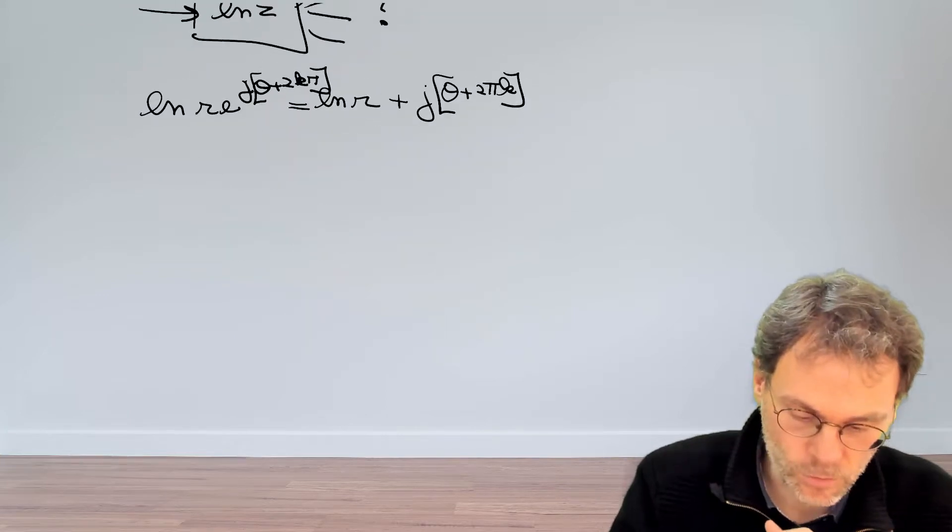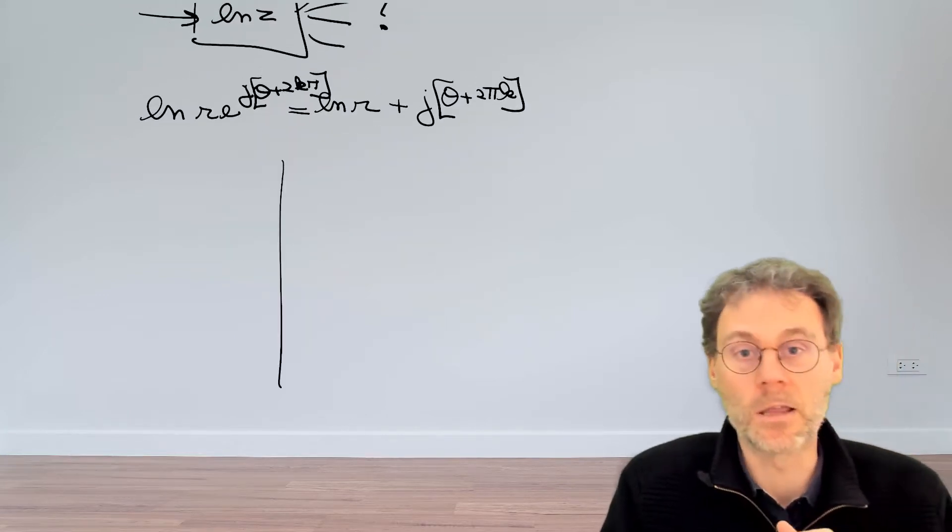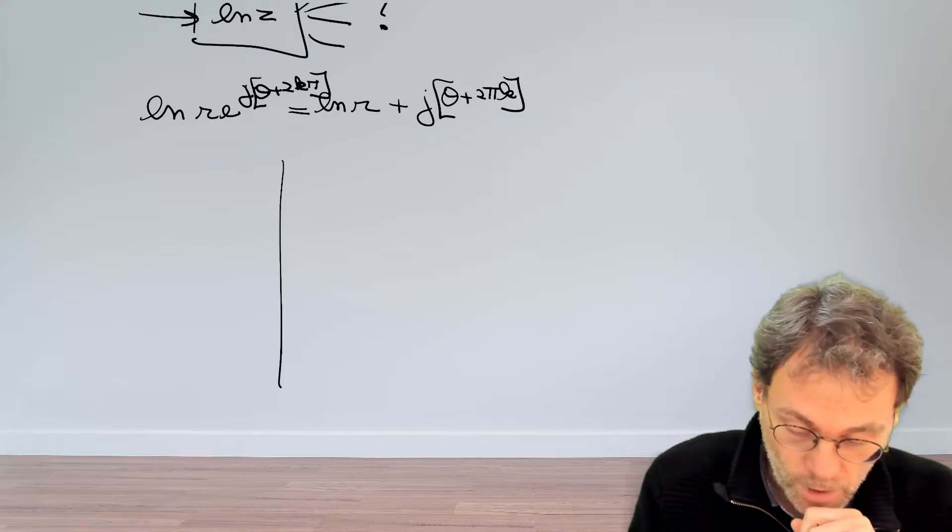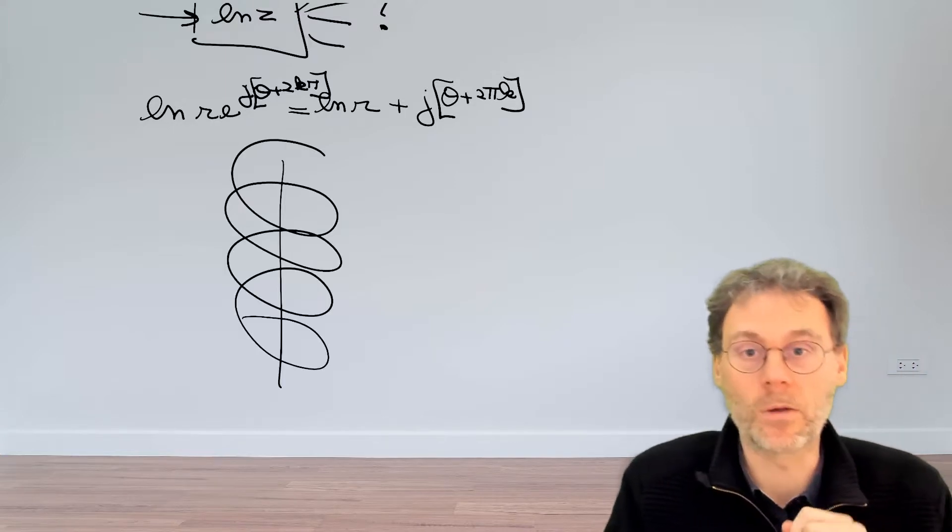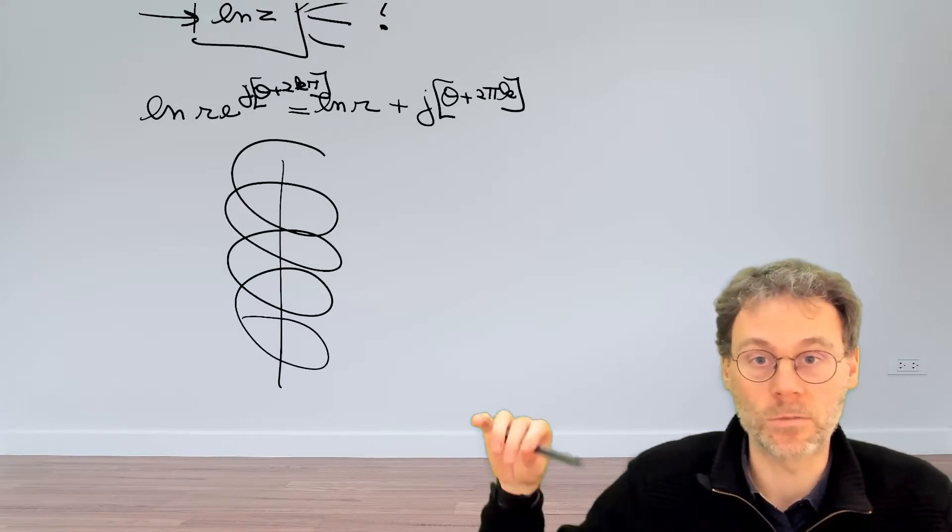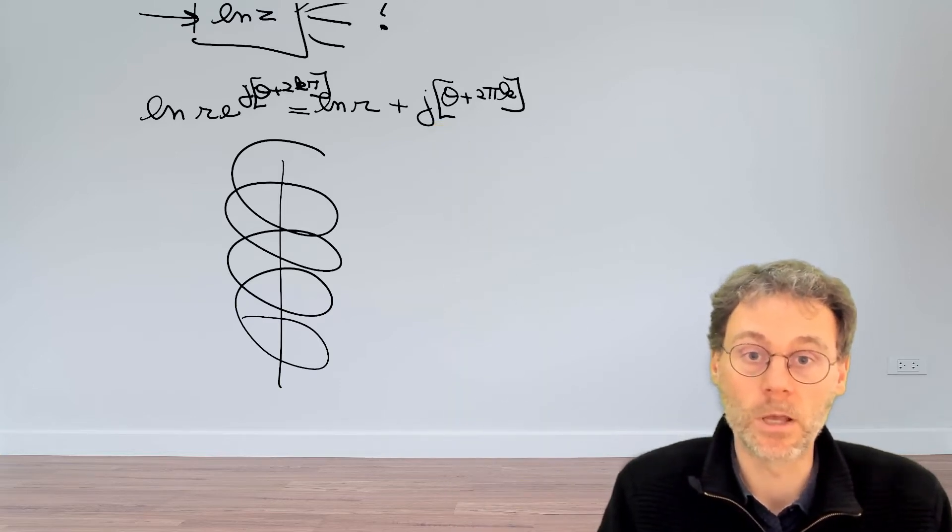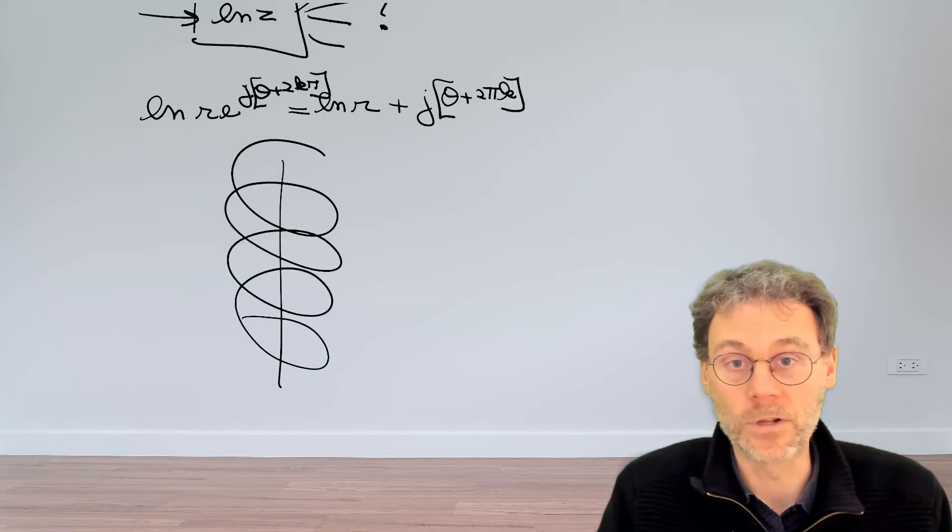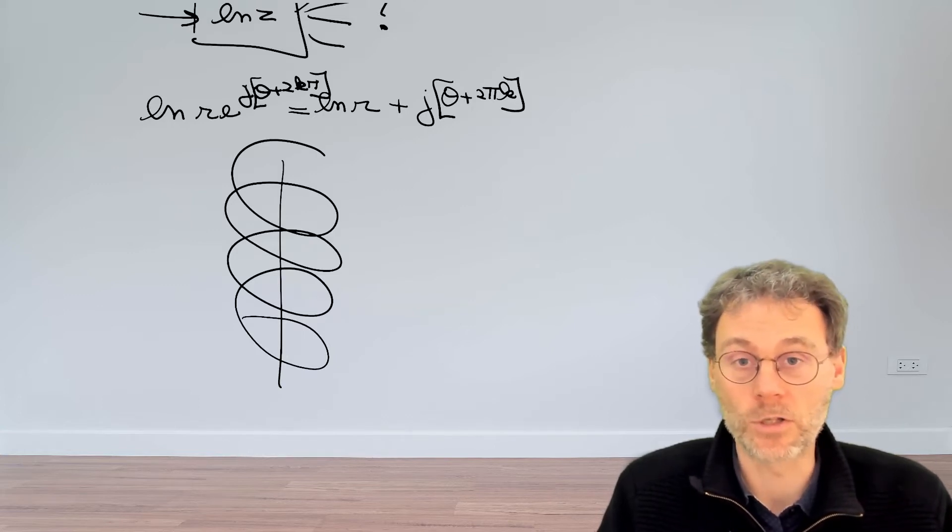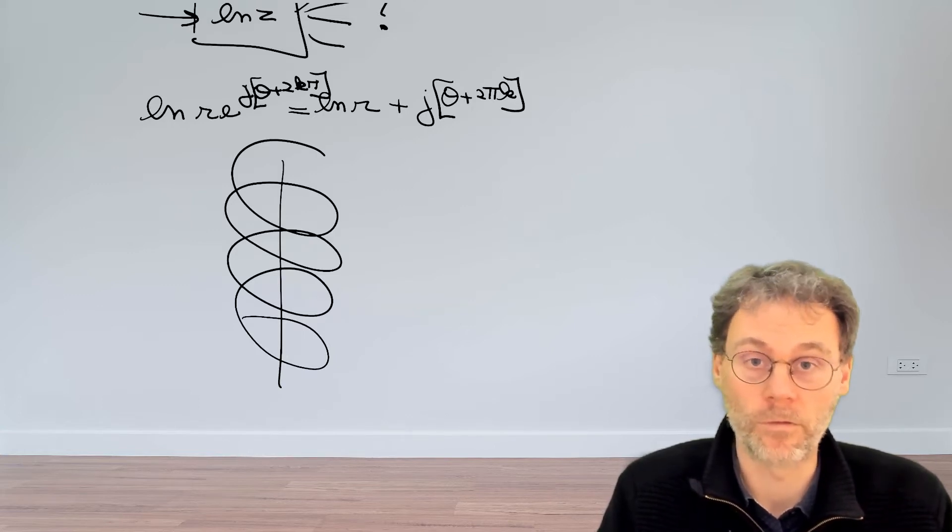It's a bit tricky to draw this, but it's basically, think of an infinite corkscrew, which keeps on spiraling and having an infinite number of sheets both going towards the top and going towards the bottom. So the complex logarithm is an infinitely valued function with a Riemann surface that has an infinite number of sheets.